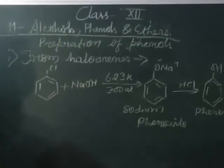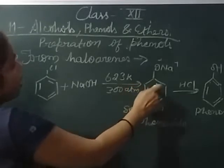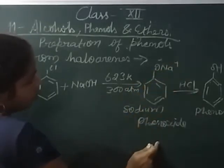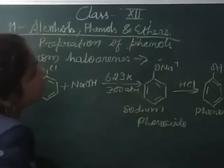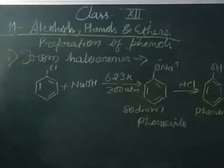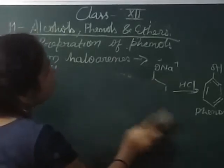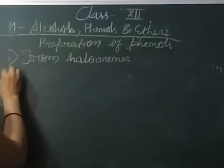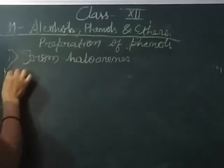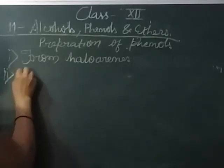To summarize the first method: chlorobenzene reacts with NaOH at 623 Kelvin and 300 atmospheric pressure, converting into sodium phenoxide. When sodium phenoxide undergoes acidification, it is converted into phenol.